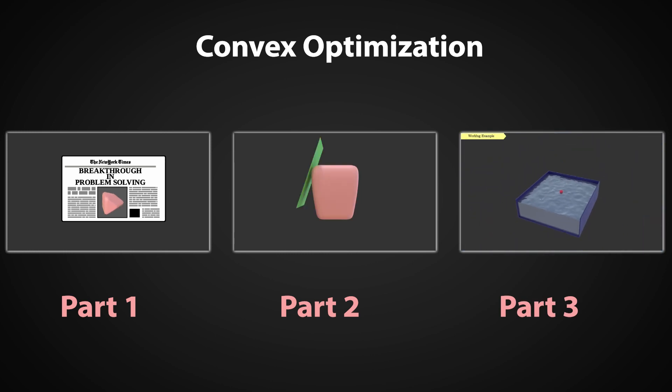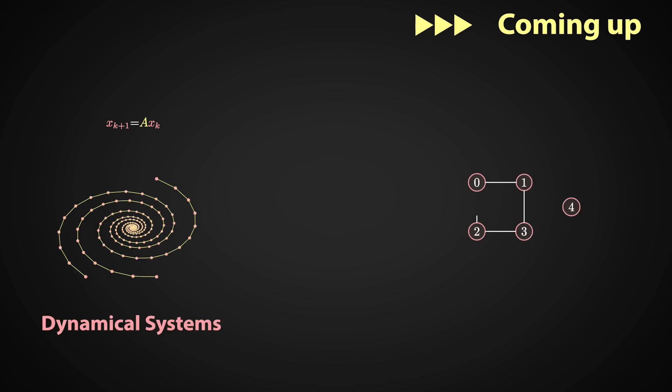That's it for today. I hope you get some appreciation for what semi-definite programming is capable of. In the next and probably final video of this series, we will see two of the best applications of semi-definite programming. One application to dynamical systems, and another one to combinatorics. As usual, if you liked the video make sure to like and subscribe, and see you next time!